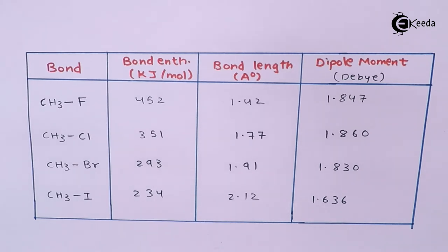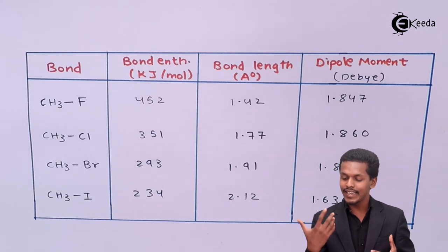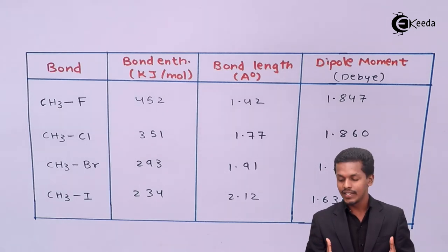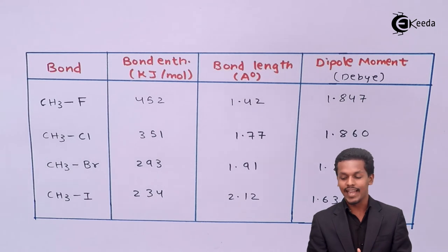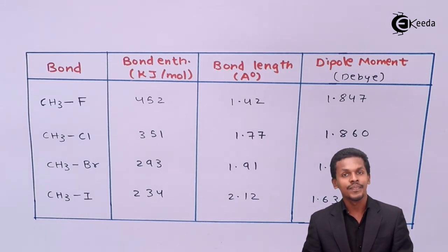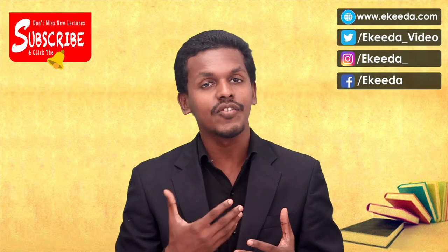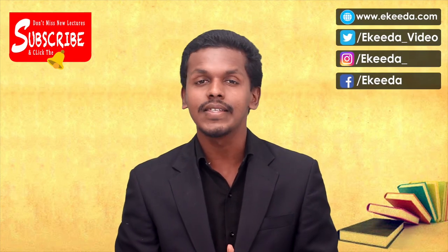From this data we can easily estimate the nature of the carbon-halogen bond. It clearly indicates that the bond strength of carbon-fluorine is the greatest, decreasing progressively down the halogen group. Thank you friends for watching this video. I hope you have understood and gained various information regarding this topic.